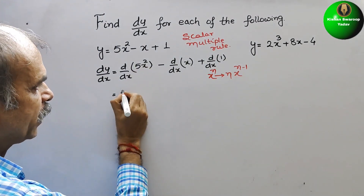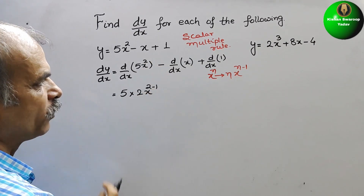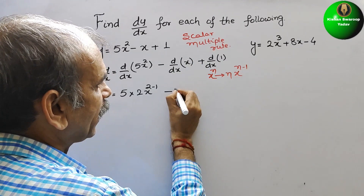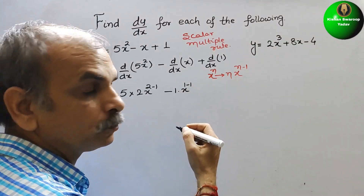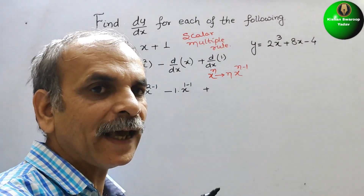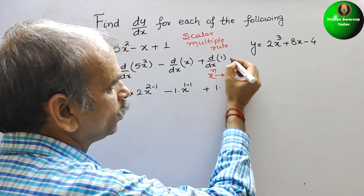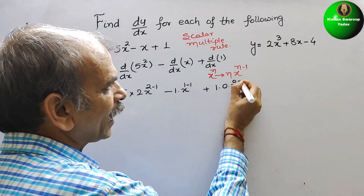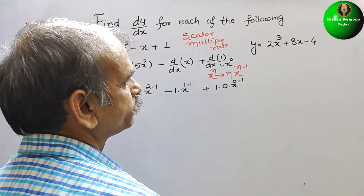So here comes 5 into 2, x to the power of 2-1, minus here the power is 1 only, so we write 1 and x to the power of 1-1, that is 0, and here plus, here a constant is there, that means x to the power of 0. So we can write it as 1 into x to the power of 0, that means 0, and x to the power of 0-1. So this we can write as 1 into x to the power of 0, that is a constant.